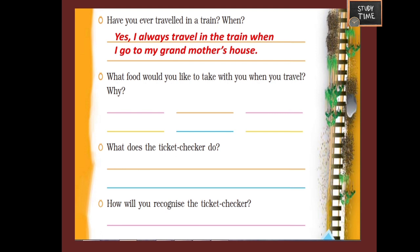Question: What food would you like to take with you when you travel and why? You can write any food items like biscuits, fruits, chocolate, snacks, sabji or puri. For the reason, you can write either that it is tasty or that it will not spoil easily.